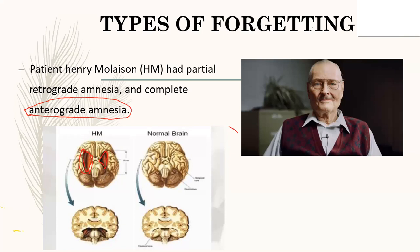HM also had a partial retrograde amnesia — he didn't completely forget all past information, but after the surgery he had difficulties recalling information from before he was a teenager. So HM had both retrograde and anterograde amnesia. That summarizes amnesia and HM's case.